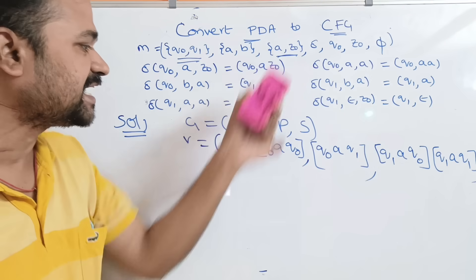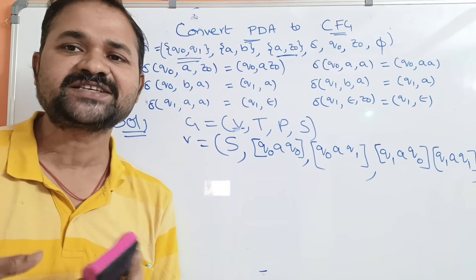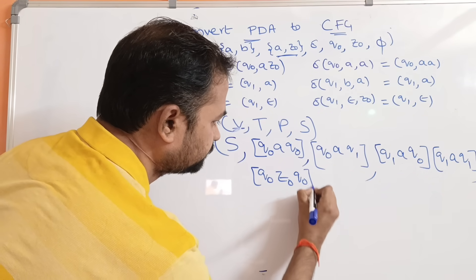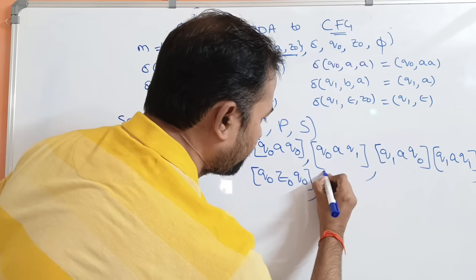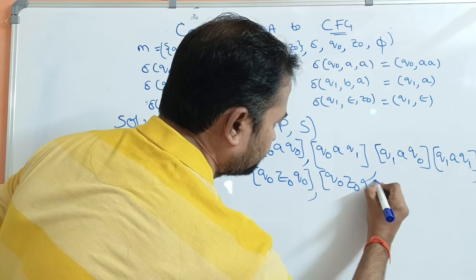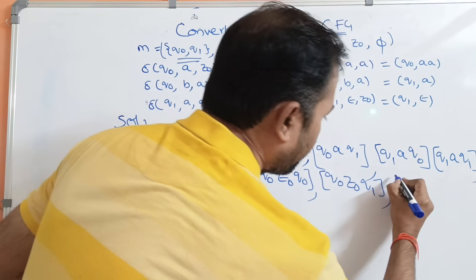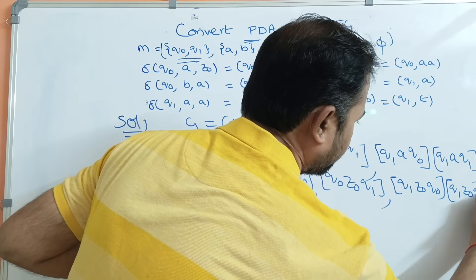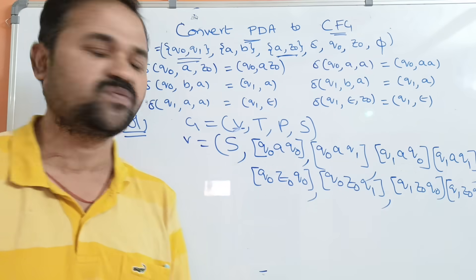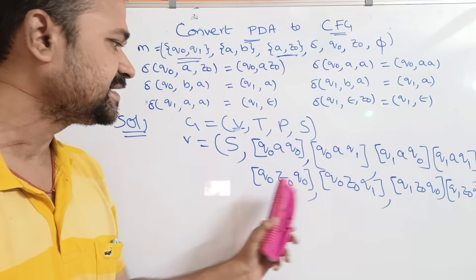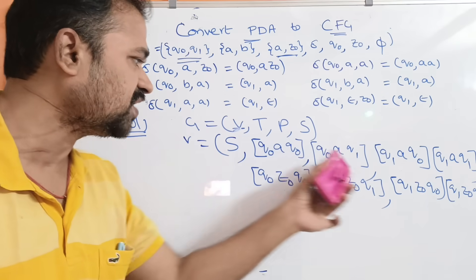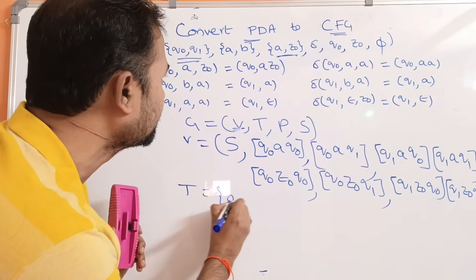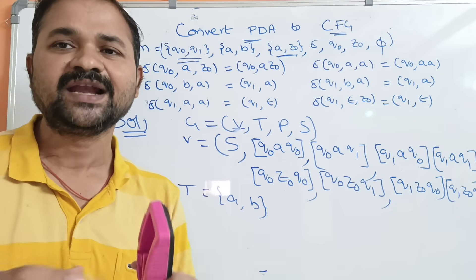So next we have to take Z0 as the middle symbol. Till now we have taken A as the middle symbol; next we take Z0. So totally here in the context-free grammar we have 9 variables. Next we have to write the terminal symbols — there is no difference, the terminal symbols are A and B only.